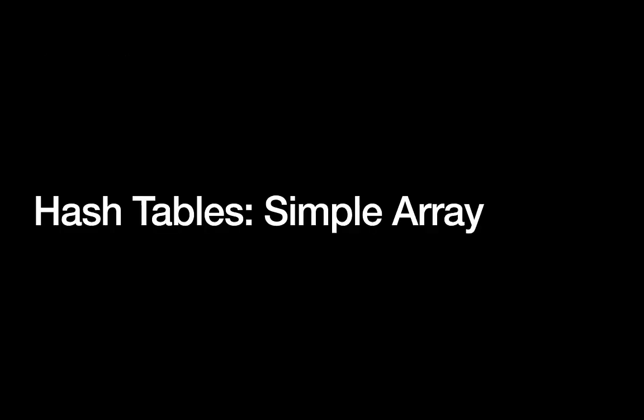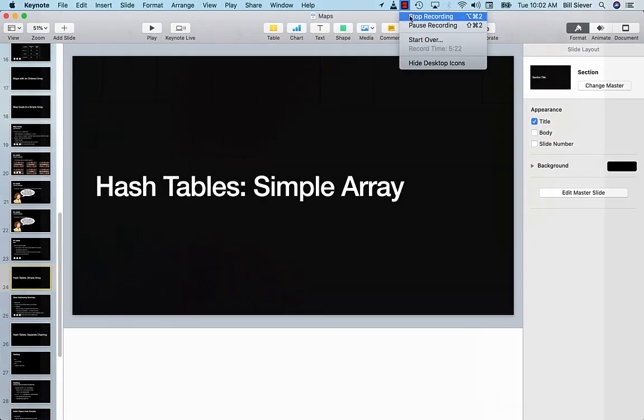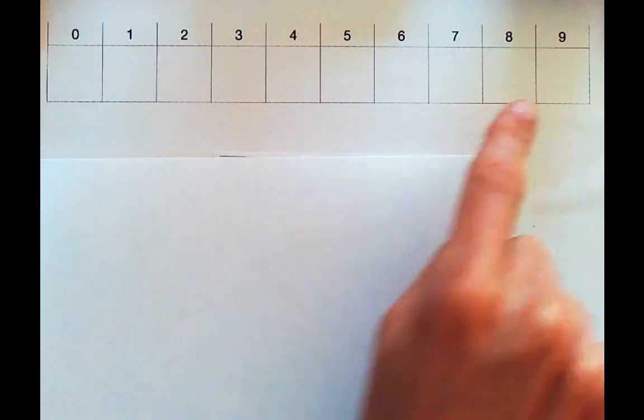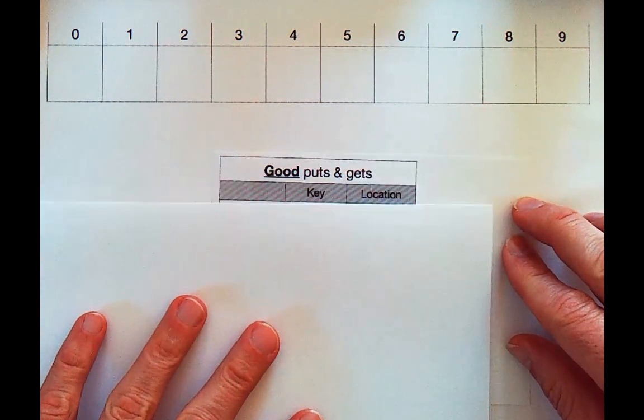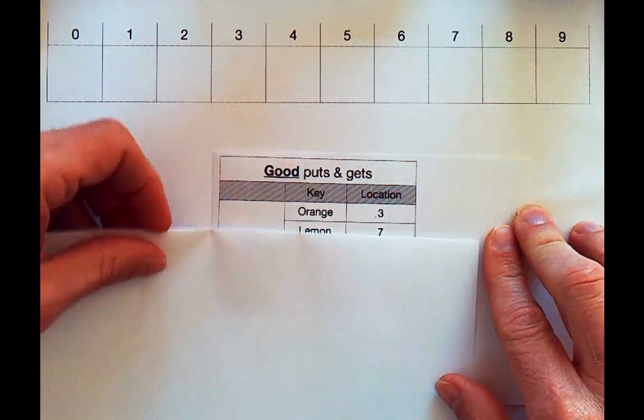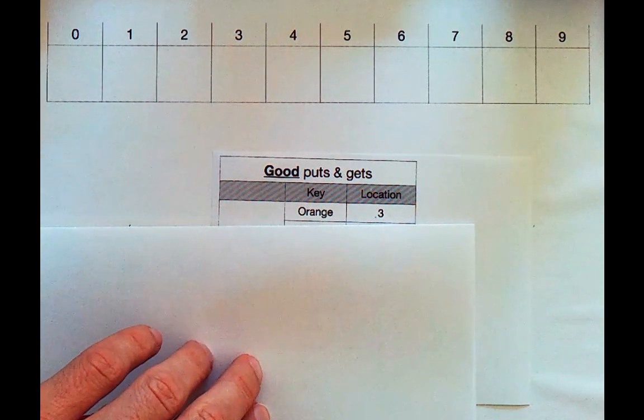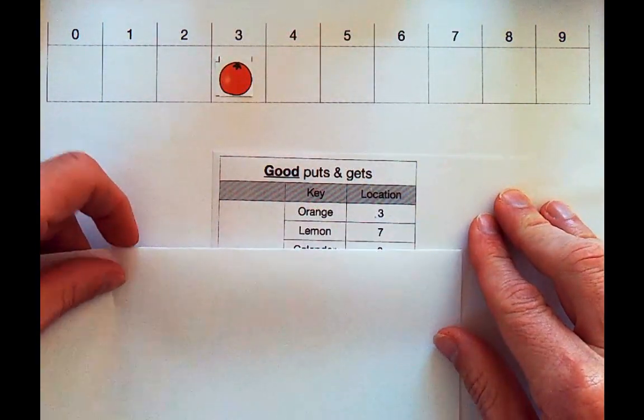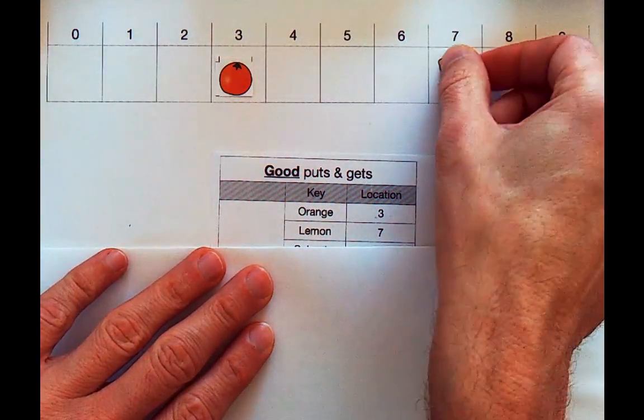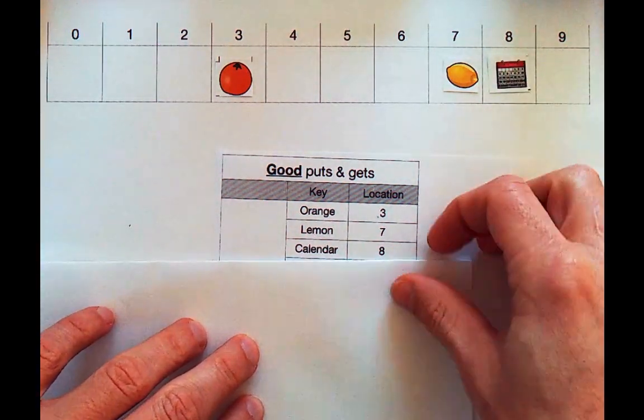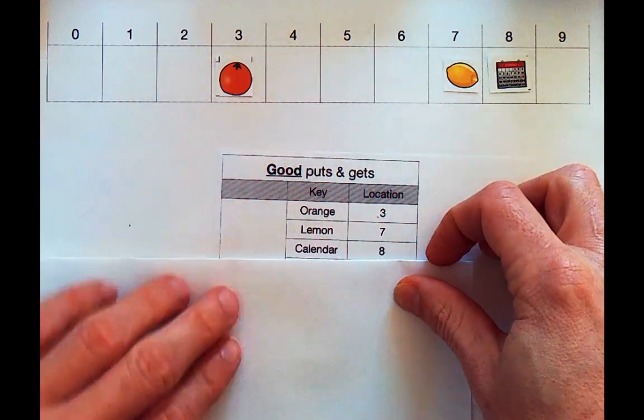Okay, so let's use a simple array. Here, I have a simple array with 10 boxes, indices 0 through 9. So currently, it's empty. So we will go through a sequence of different operations. We will look at individual keys and their location. So these will be puts. We'll start off by putting an orange. And we have some process that tells us that oranges belong in location 3. So we'll go ahead and put an orange in location 3. Next, we will put a lemon. And our process here tells us that for some reason lemons go in box 7. And then we will put a calendar. I guess calendars go in box 8 for some reason. So notice these aren't in alphabetical order. These aren't in any particular order. There's this process that just instantly looks at an item and tells us exactly where it belongs.